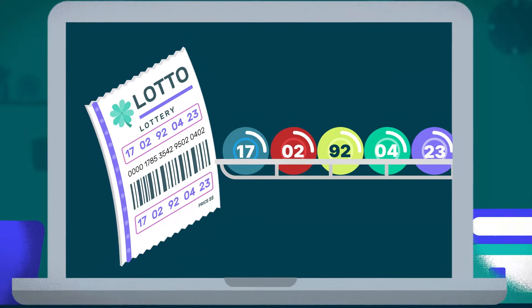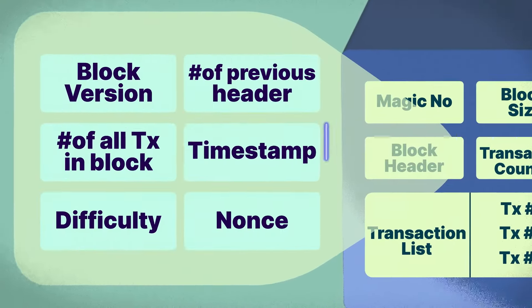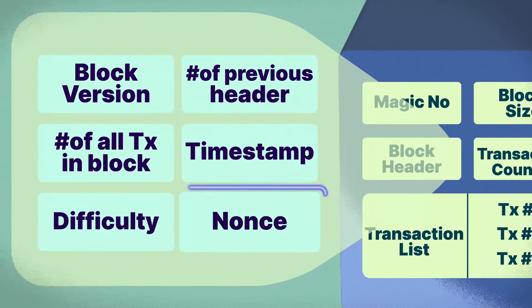To understand this analogy, here's the mining process in more detail. Each block contains a block header, which contains data such as a timestamp, a reference to the previous block, and a number called a nonce.